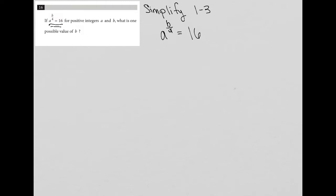The question tells us that A and B are positive integers, so we know that A is greater than 0, B is greater than 0. They're not fractions. They're positive integers. And the question just wants us to figure out what is one possible value of B.